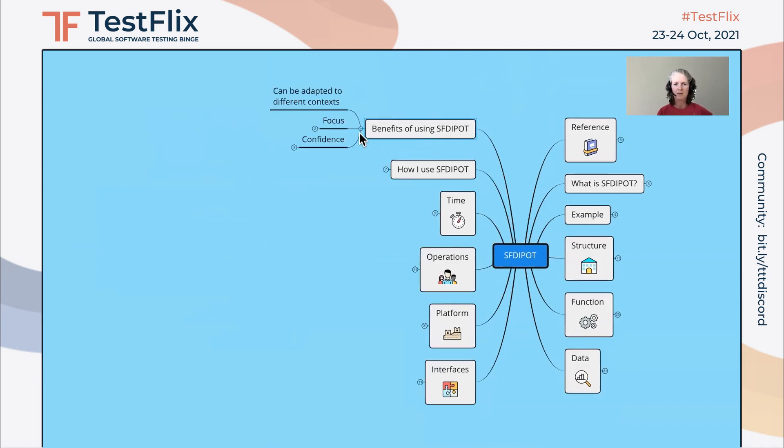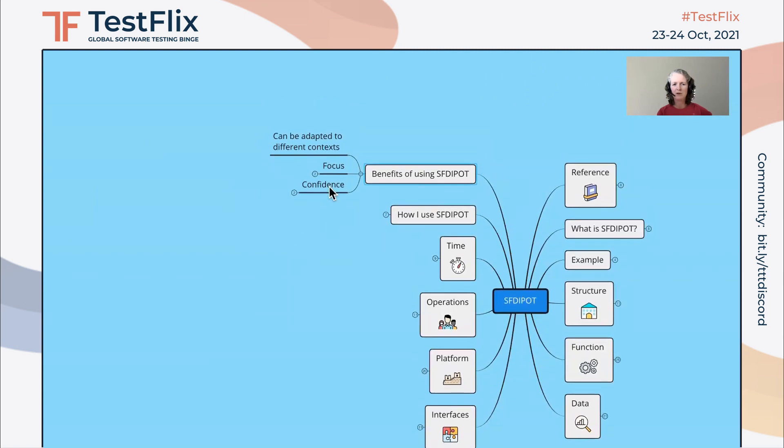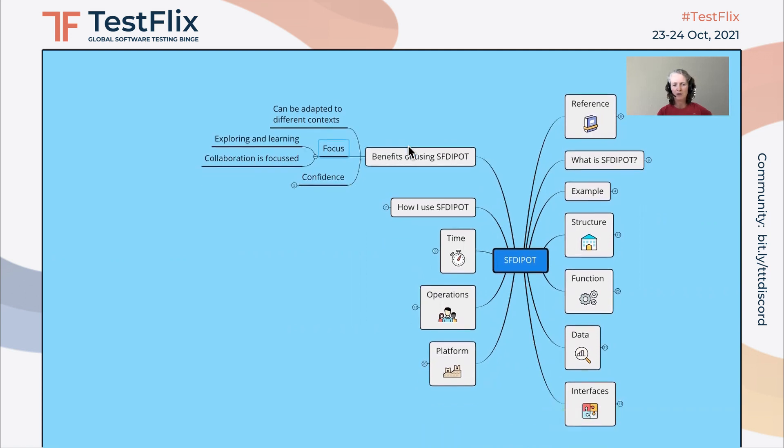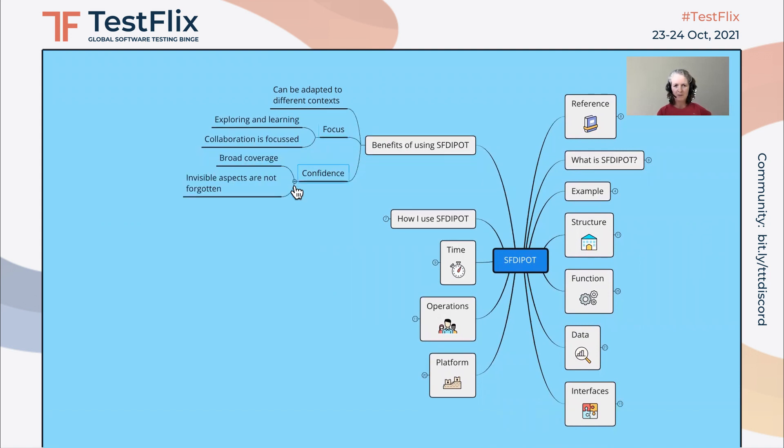Benefits I see of using San Francisco Depot is that it can be adapted to different contexts. So you can just ignore whatever is not relevant for your particular situation, and also you can add other categories that might be relevant and specific only for your context. So what I find for me is it brings a lot of focus on my exploring and learning, and also on the subsequent collaboration. It gives me confidence that I know there's broad coverage, and that I've probably more than likely covered all the important risks, and especially that the invisible aspects are not forgotten.